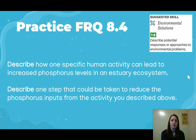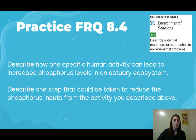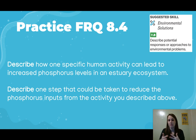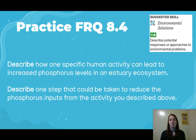This is a practice FRQ for section 8.4, practicing the skill of describing potential responses or approaches to environmental problems. Describe how one specific human activity can lead to increased phosphorus levels in an estuary ecosystem — remember that estuaries, mangroves, and wetlands all count as estuary ecosystems. Then describe one step that could be taken to reduce the phosphorus inputs from that activity. That wraps up the notes on 8.4 about human impacts to mangroves and wetlands.